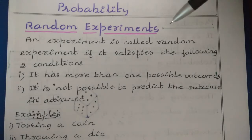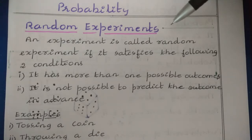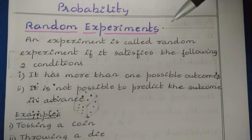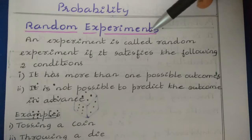In the case of a random experiment, it is not possible to predict the output. We can't say the exact result of the random experiment. Such experiments we call random experiments — where we have more than one possible outcome, and we can't predict the result in advance.